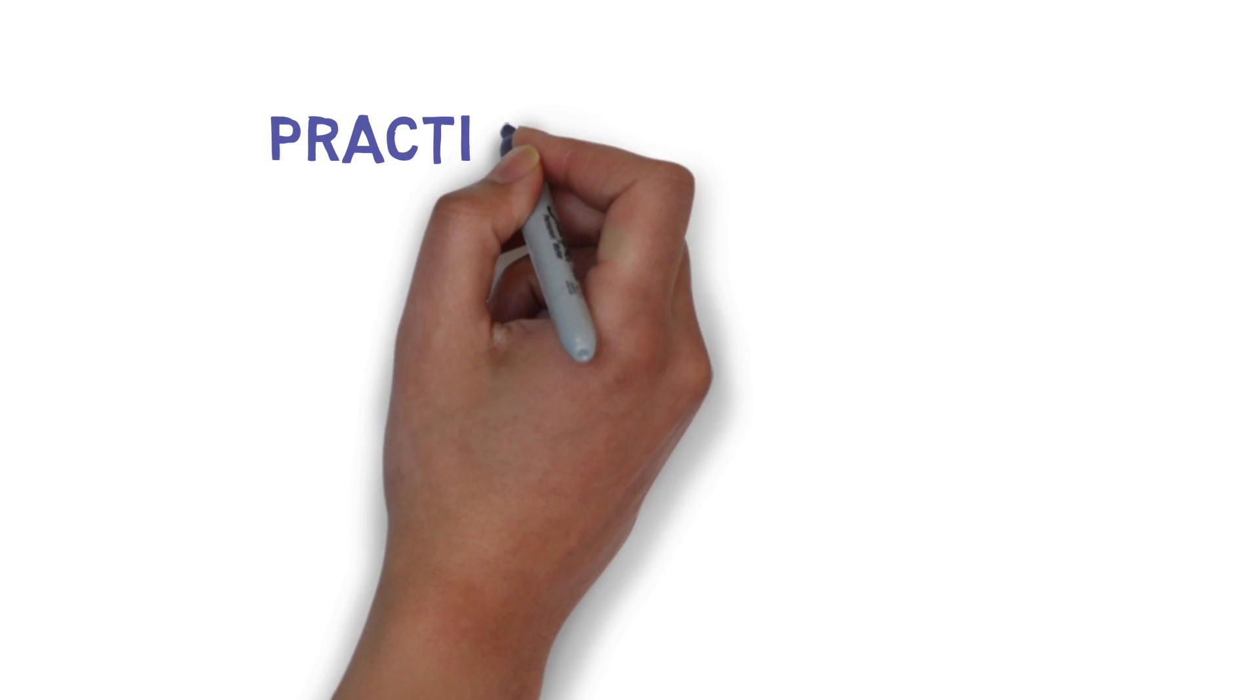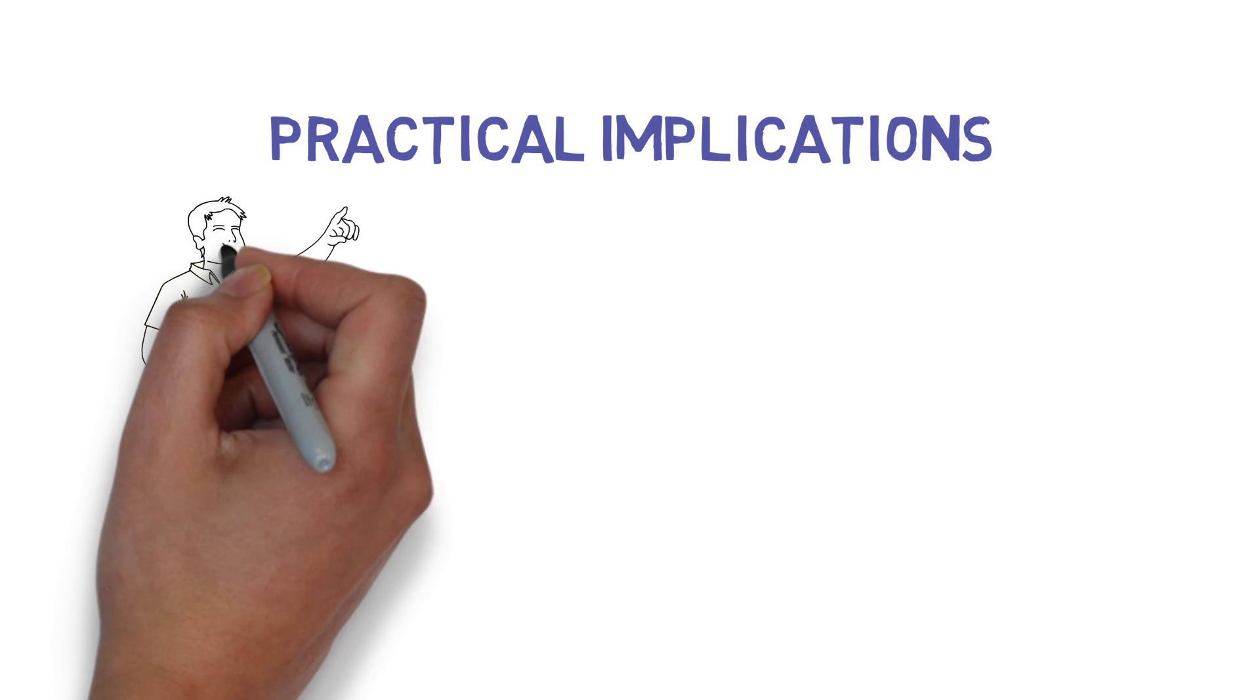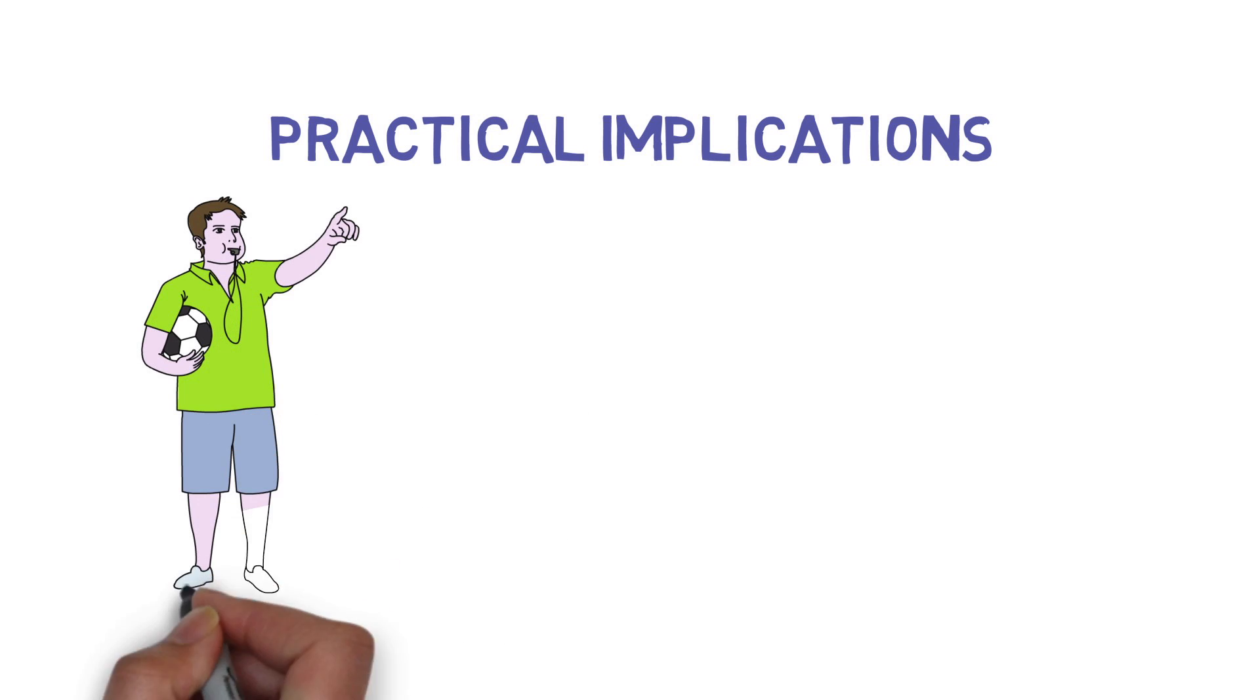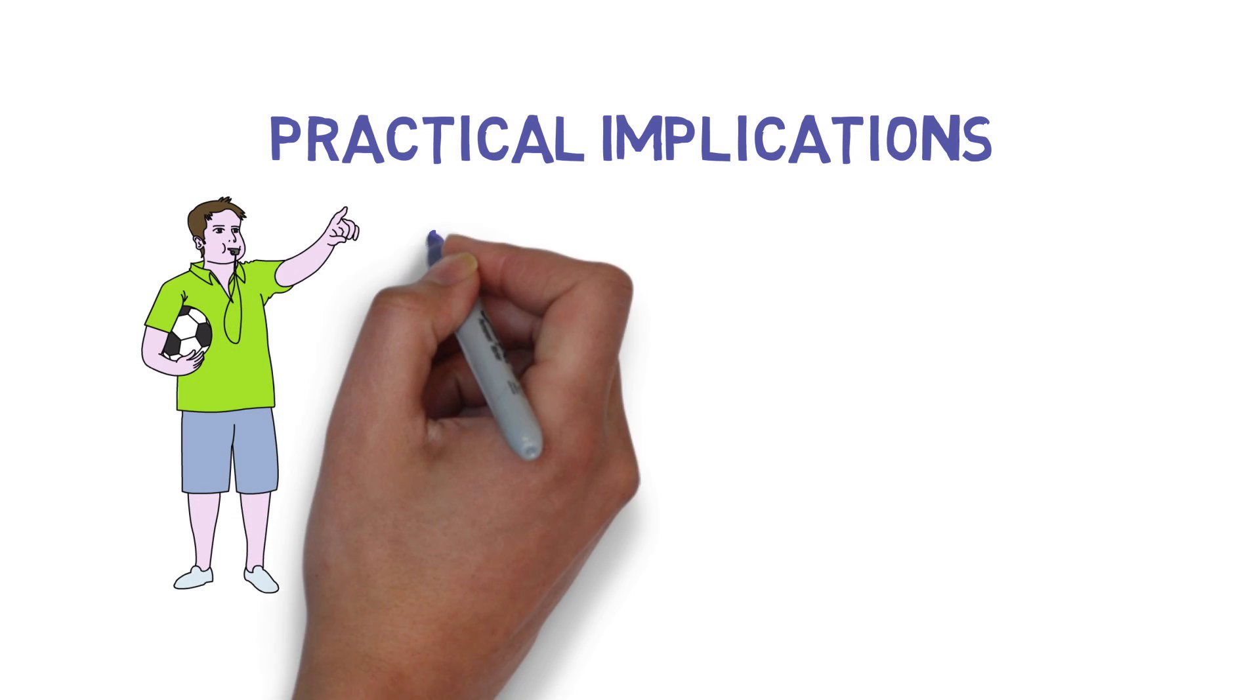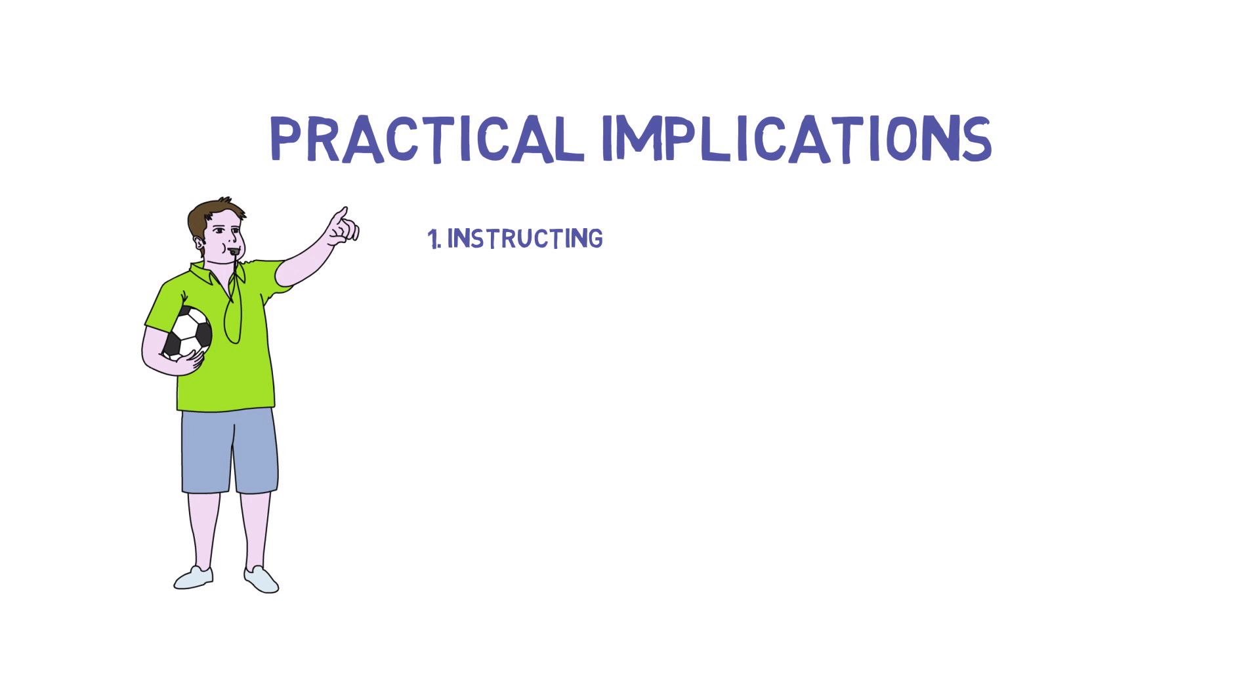Practical implications. Firstly, when instructing athletes, the coaching cues should create an external focus of attention. For example, if shooting for goal, instruct the athlete to focus on where they want to kick the ball rather than their movement.